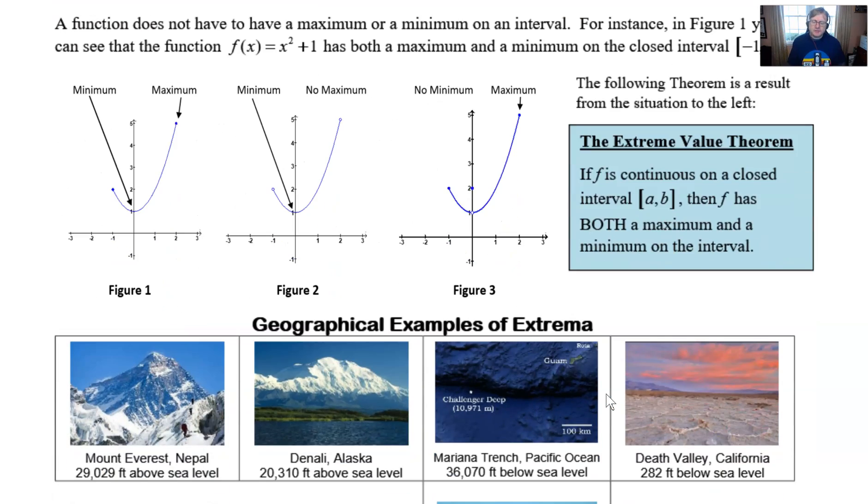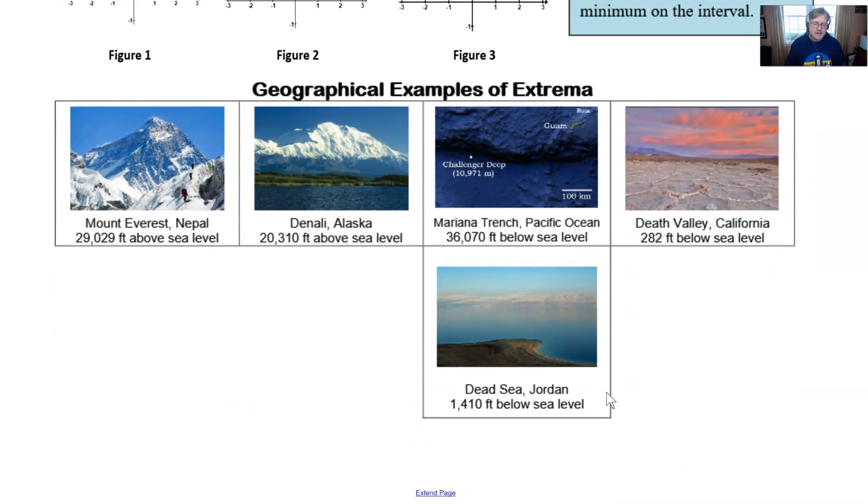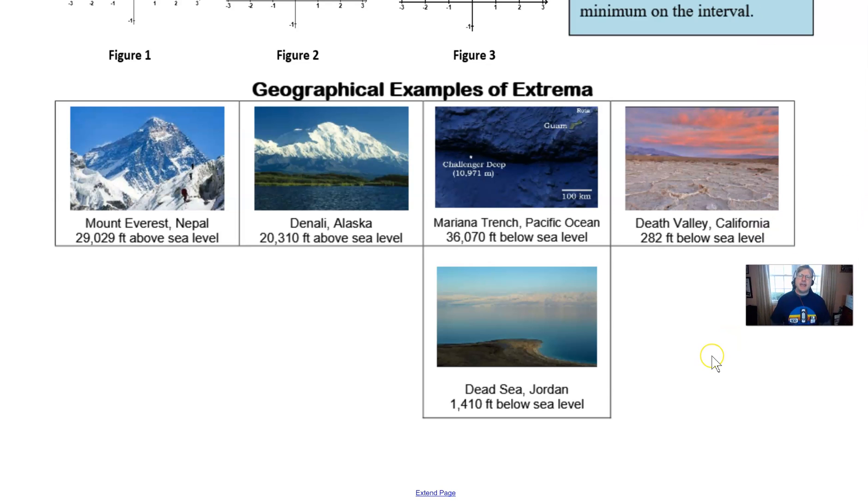Now we have some geographical examples of extrema and I like to use this with my students to kind of get them comfortable with the difference between overall extrema and local extrema. So for example, let's say that we've got Mount Everest in Nepal that is the overall highest point on the planet, 29,000 feet above sea level. However, let's say that you are in the United States there's also a very high point in the United States that's Mount Denali in Alaska used to be Mount McKinley and it's just a mere 20,000 feet high.